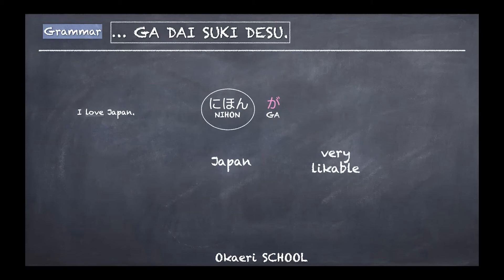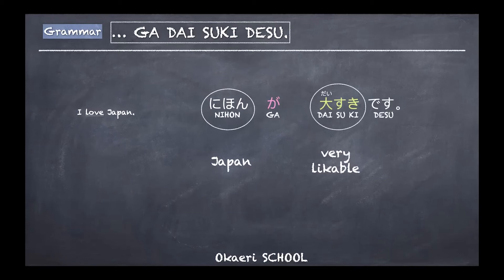To say you love something or like it very much, you use daisuki — literally 'big like.' For example: nihon ga daisuki desu — I love Japan, or I really like Japan. The kanji for dai means big, and I've written it with furigana as a helper. So daisuki desu is a huge, strong like.